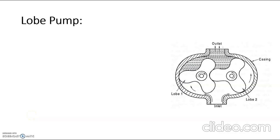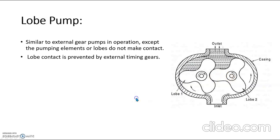The second category of rotary pump is lobe pump. Lobe pump is similar to external gear pump, but it has a major difference. There is no contact between the pumping elements or lobes. These are called lobes. A lobe pump has at least two lobes - lobe one and lobe two.